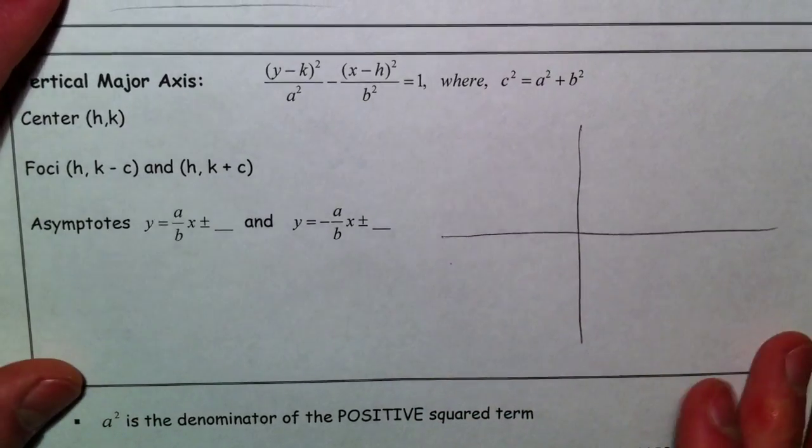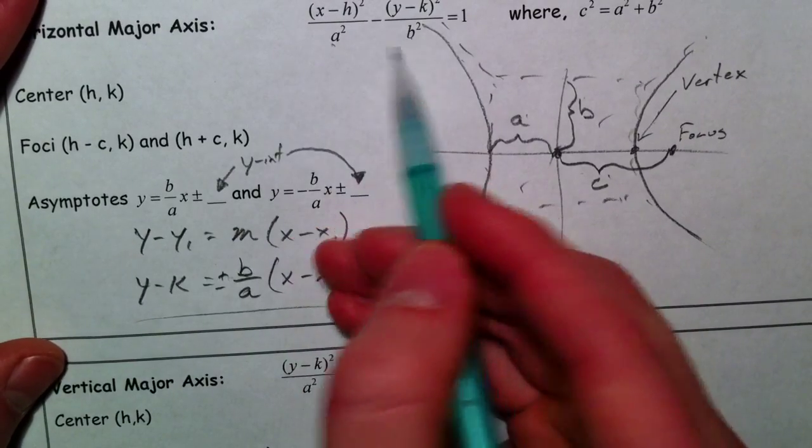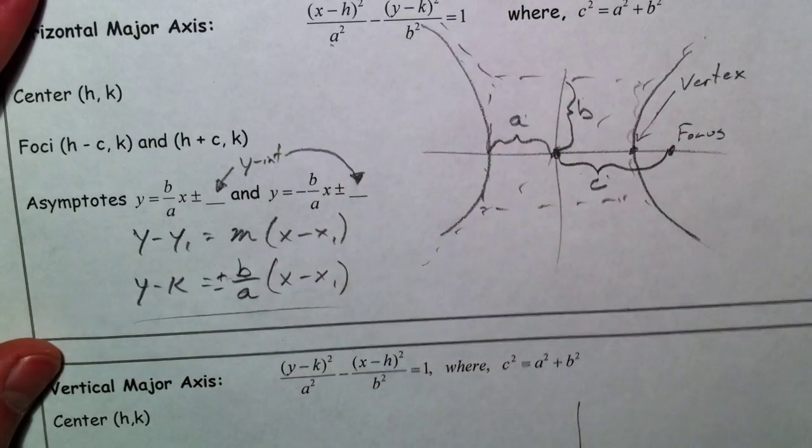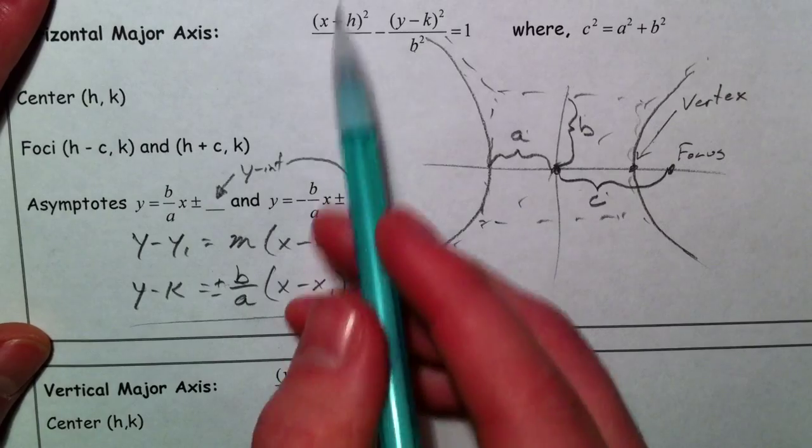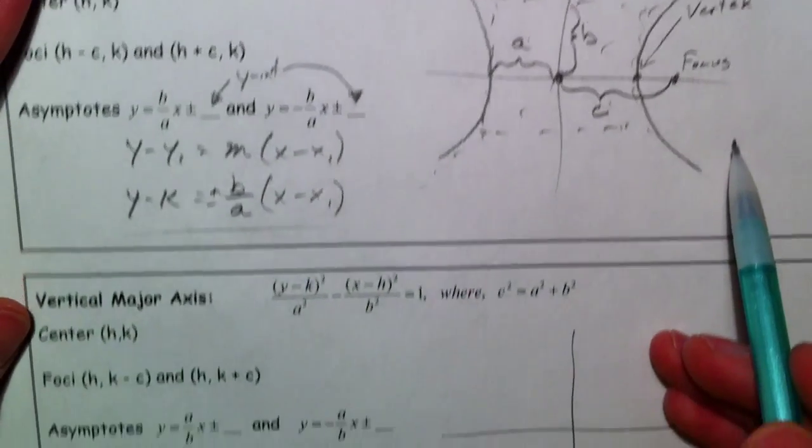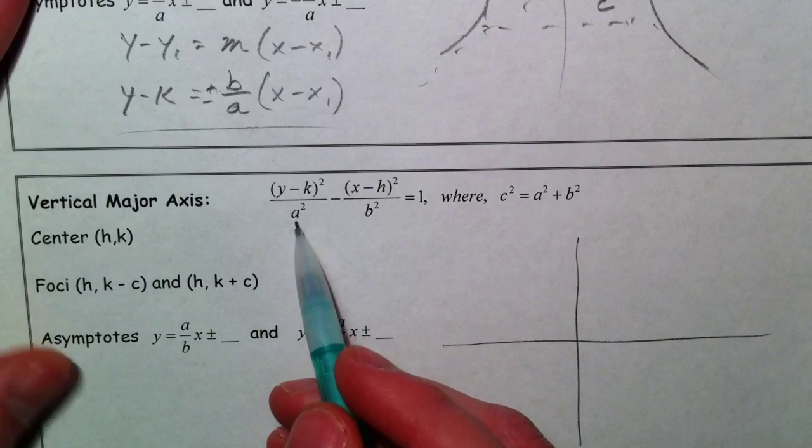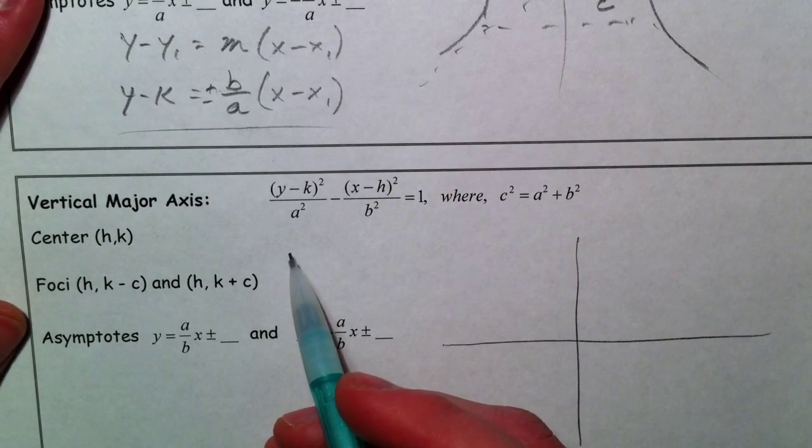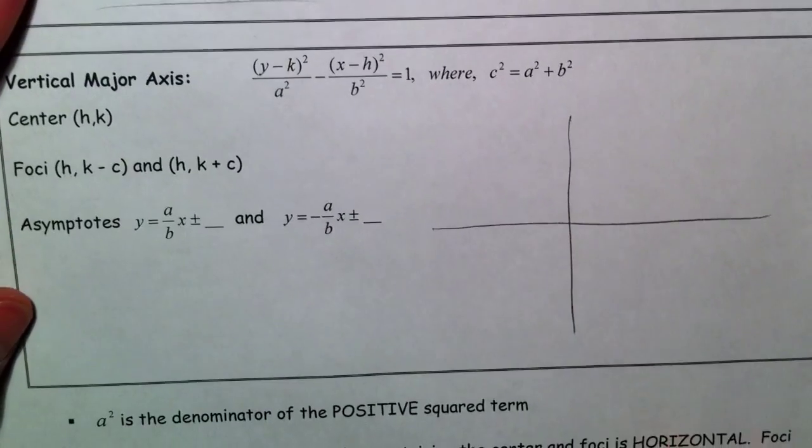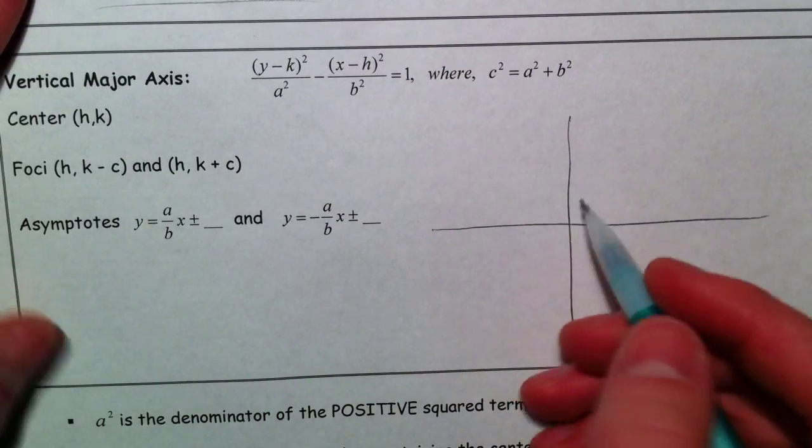So, with ellipses, it was whatever number was bigger determined if it was wider or taller. With hyperbolas, notice the first equation is x squared, opens left to right. Second equation is y squared, and so it's kind of like our parabolas, but exactly opposite. So don't think about that. So if it's a y squared, it's going to open up and down.